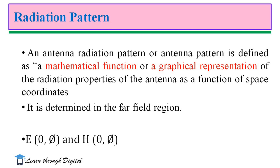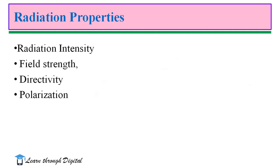Since maximum radiation occurs in the far field region. Here, radiation pattern is a mathematical function of electric and magnetic field strength with respect to the space coordinates theta and phi.